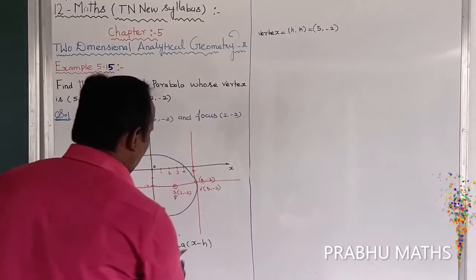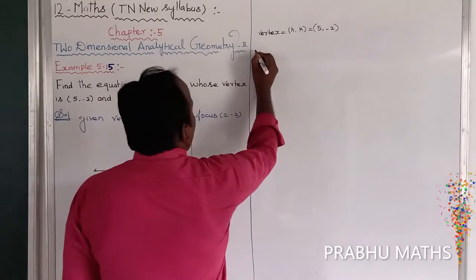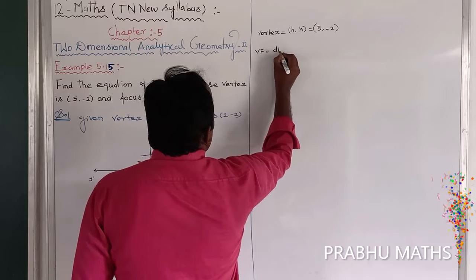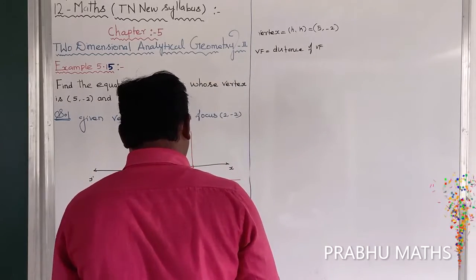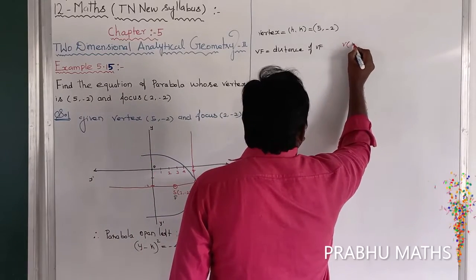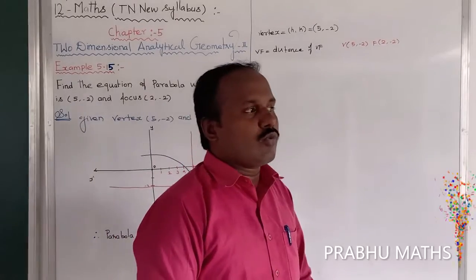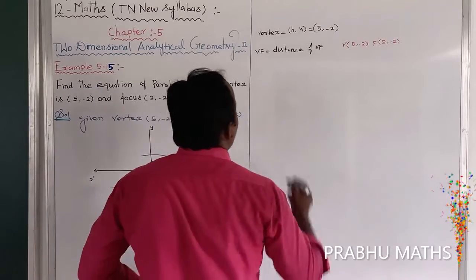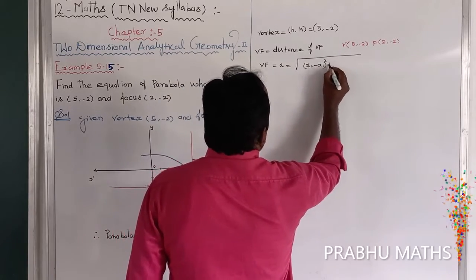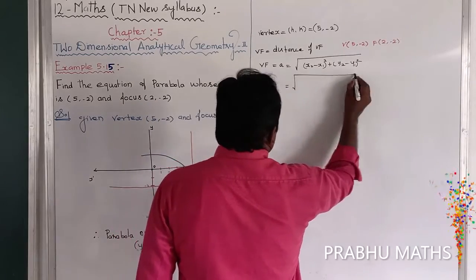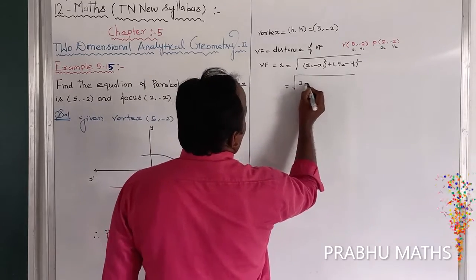To find the value of A, we calculate the distance from the vertex to the focus (VF). Using the distance formula: VF = √[(X₂ - X₁)² + (Y₂ - Y₁)²], where V = (5, -2) and F = (2, -2).